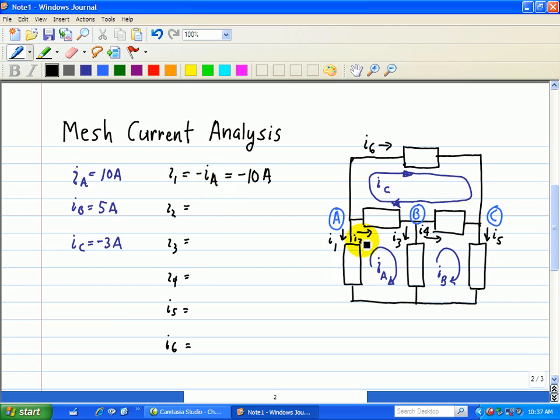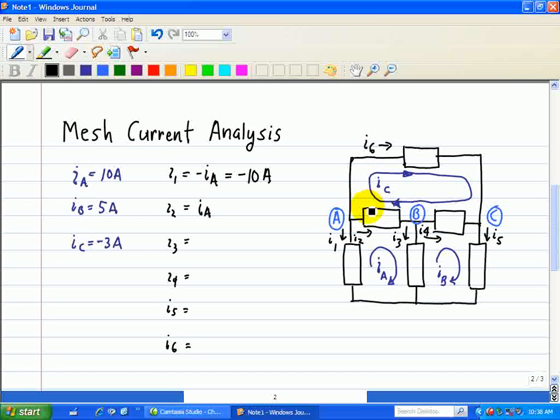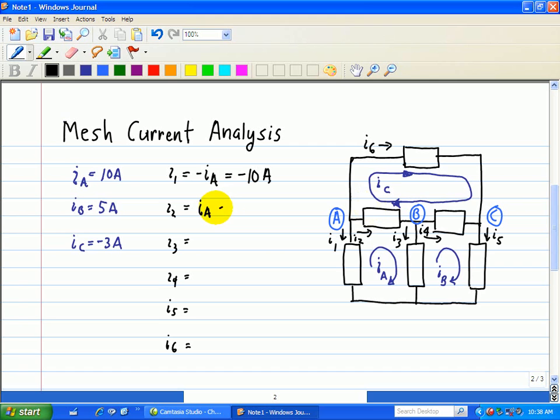Now let's look at I2. What's going through I2? We have mesh current IA in one direction, so it's in the same direction, so that's plus IA. And then we have IC going in the opposite direction, so that's minus IC going through element 2. So what we have in terms of the mesh currents is 10 minus minus 3, which equals 13 amps. So that's the current for I2.